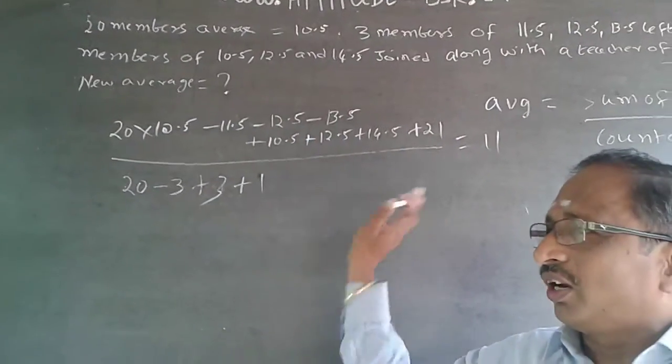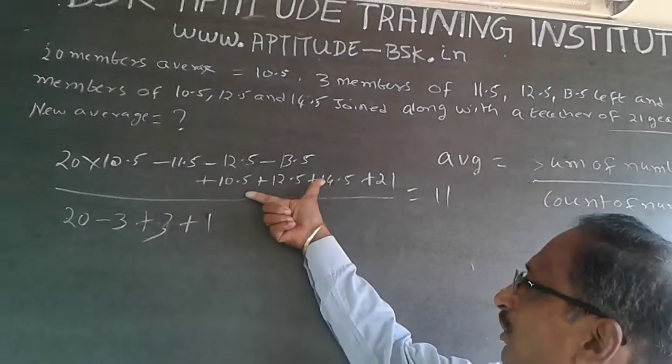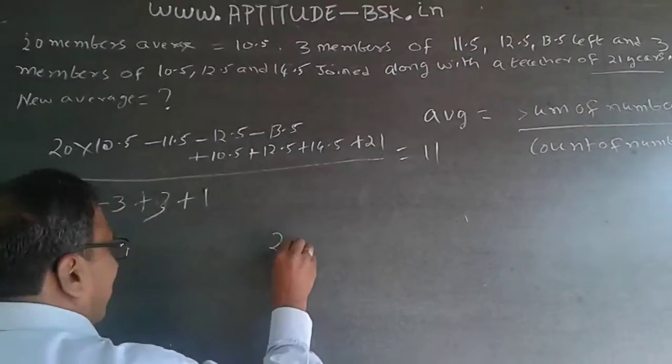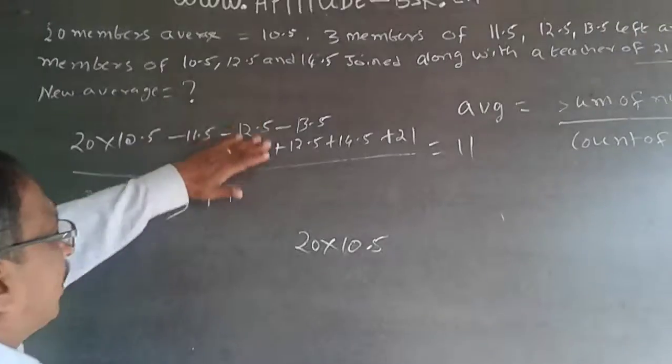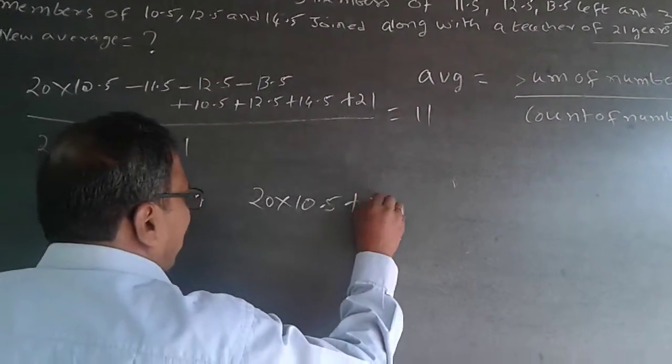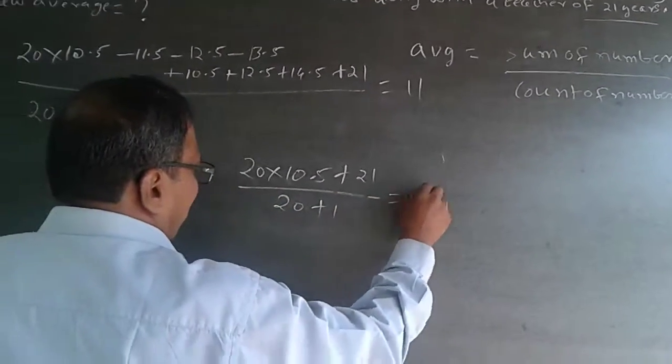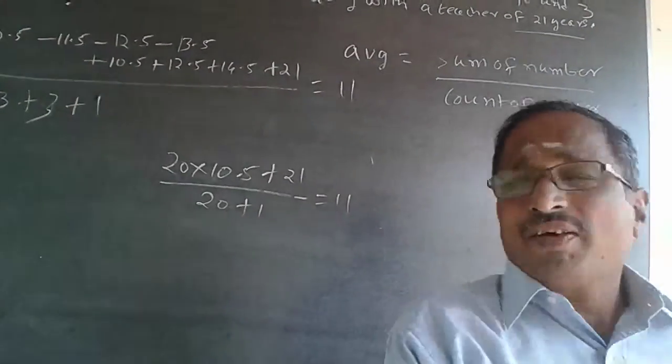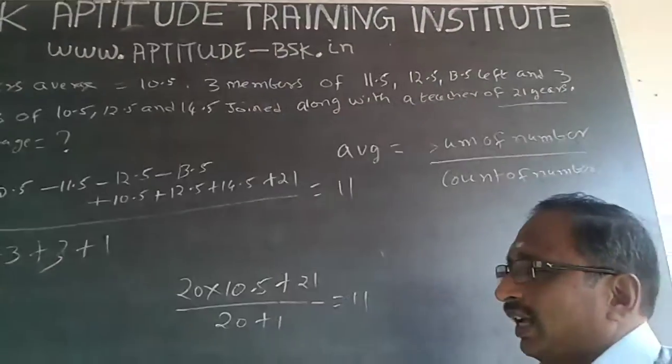You don't have to do all those things. The moment you see the sum is 37.5, this sum is also 37.5. You don't have to do anything, just do like this: 20 into 10.5, because the leaving and going number is same and the sum is also same. Plus 21 because the teacher is coming in, divided by 20 plus 1 will be equal to 11. This is 210 plus 21 will be 231 divided by 21 will be 11. The answer is 11.